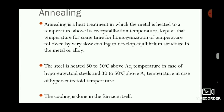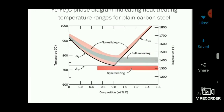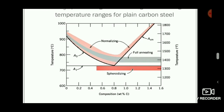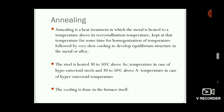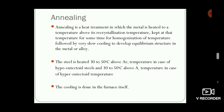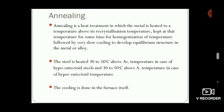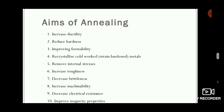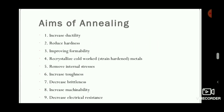The steel is heated to 30 to 50 degrees Celsius above the AE3 temperature in case of hypoeutectoid steel, and 30 to 50 degrees Celsius above the AE1 temperature in case of hypereutectoid steel, as seen in this diagram showing AE1 and AE3. The cooling is done in the furnace itself — this is the furnace cooling method.